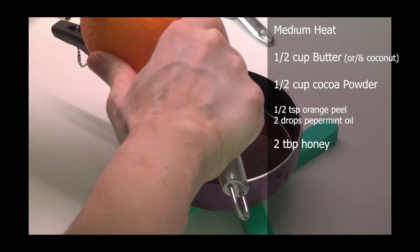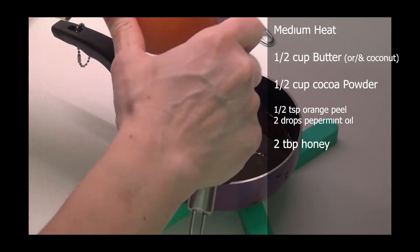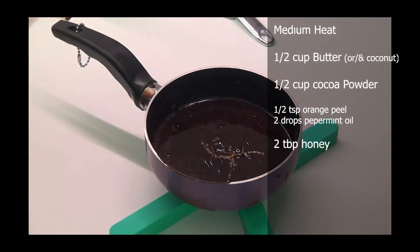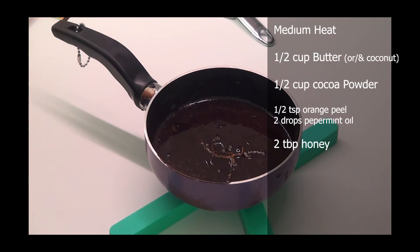Now that it's cooled down, I'm gonna start flavoring it. Here I'm adding half a teaspoon of orange peel and two drops of peppermint oil. I'm gonna sweeten it with two tablespoons of honey.